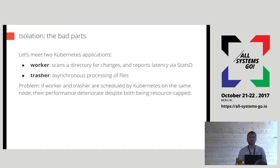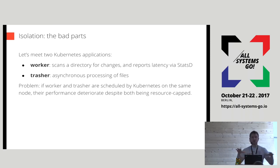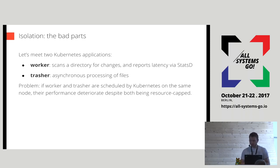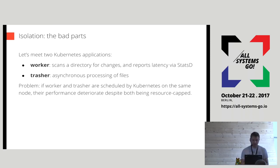A while ago, we had a customer — let's call it Sysdig — who came to us and said: we are using Kubernetes to orchestrate a heavily containerized application. We have different sorts of containers all running inside the cluster. When Kubernetes pseudorandomly allocates the same two containers on the same machine, the performance of these two applications suffers. We asked: are you limiting the resources these containers can consume? The customer said yes — they were using CPU limits, memory limits, and even block IO limits.